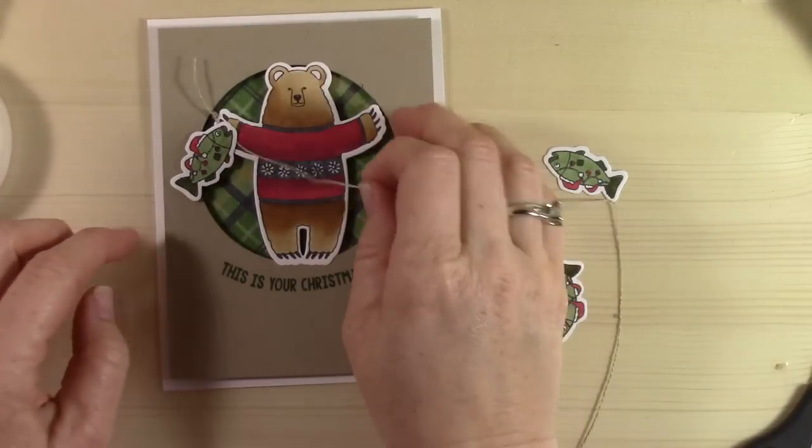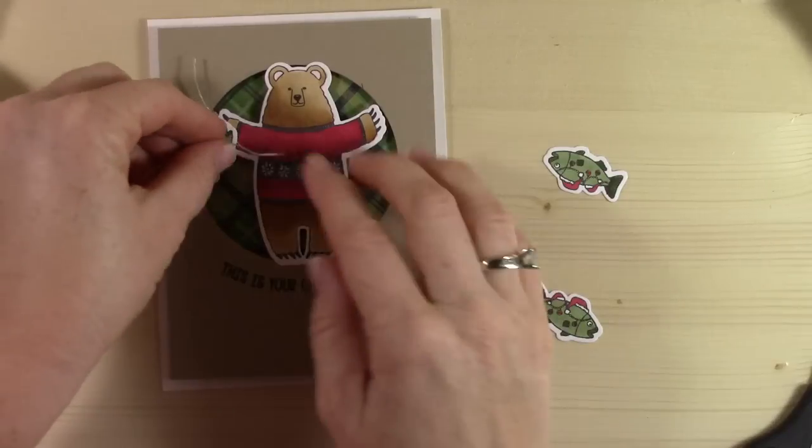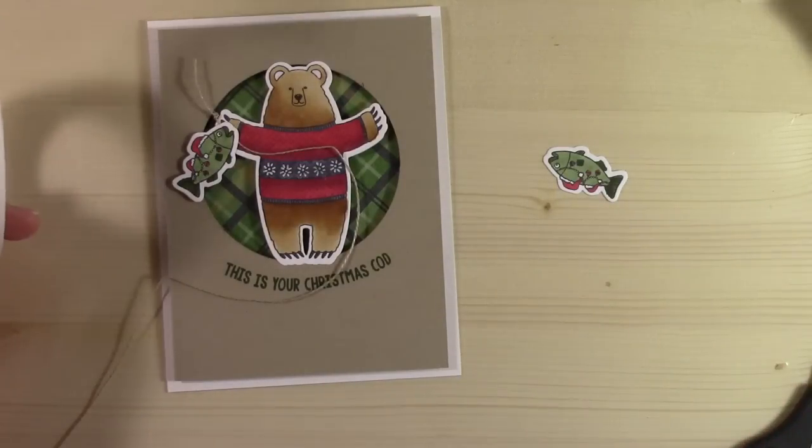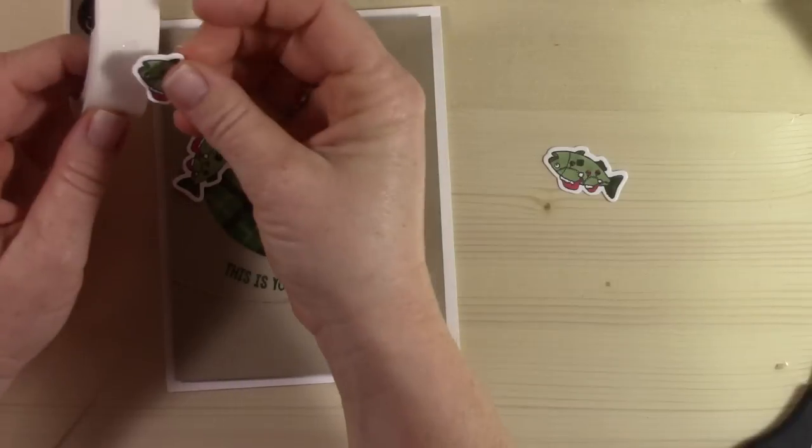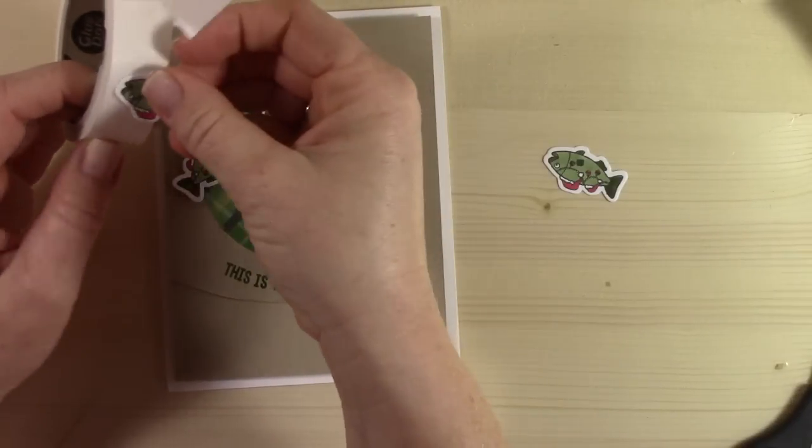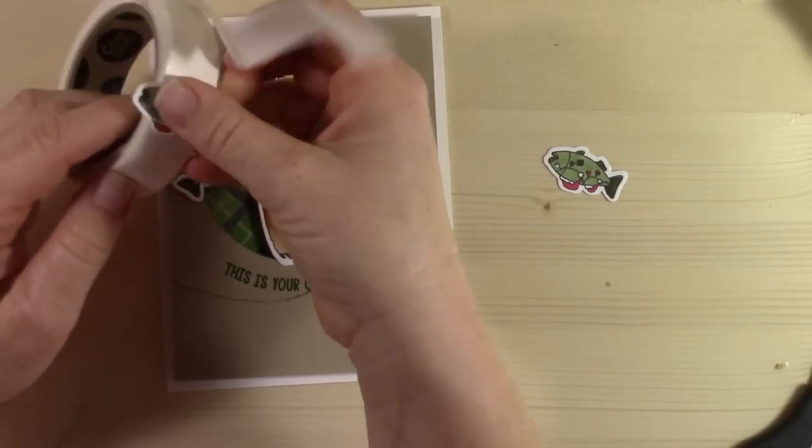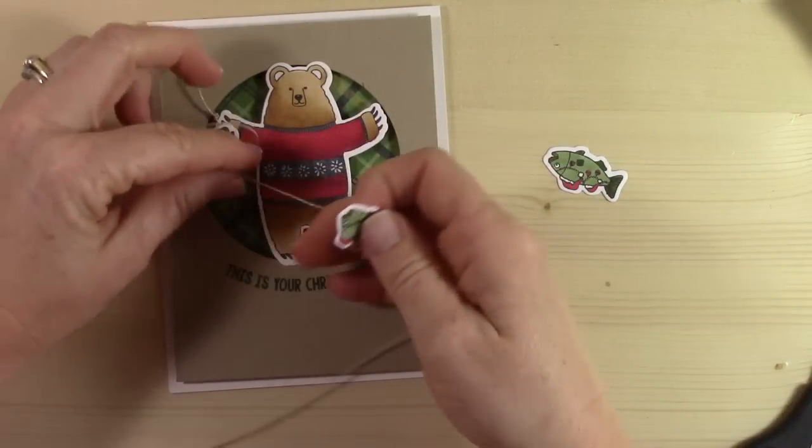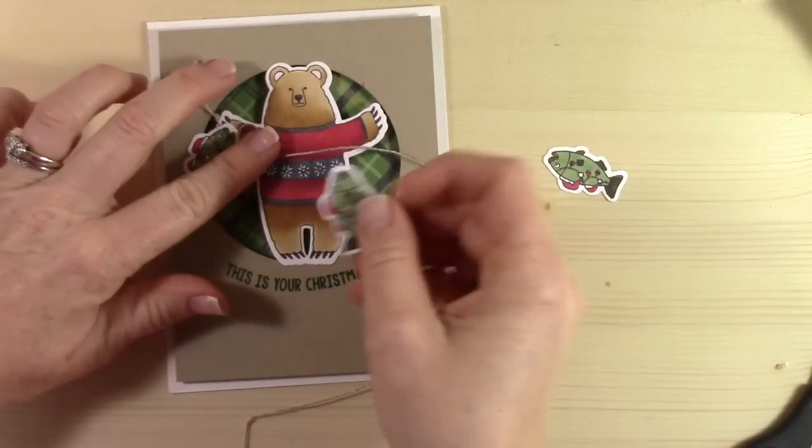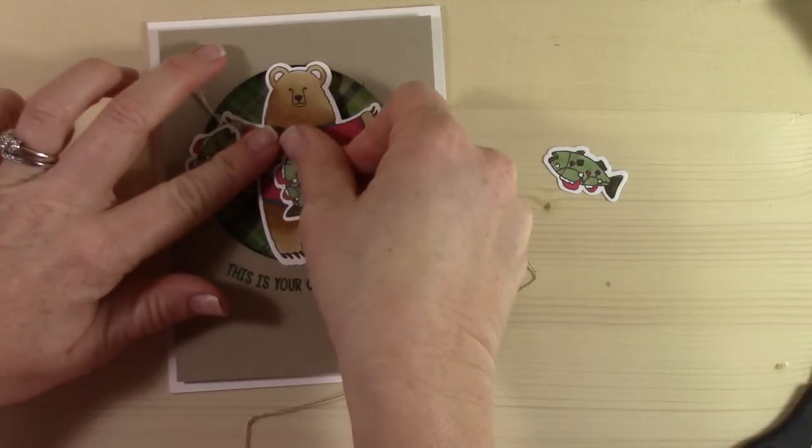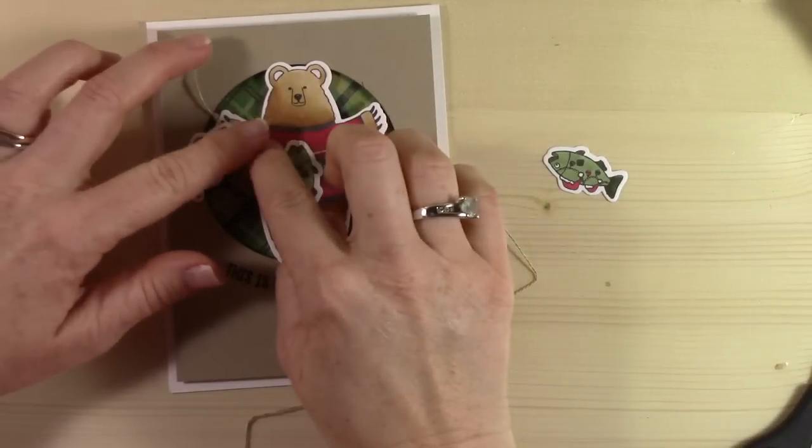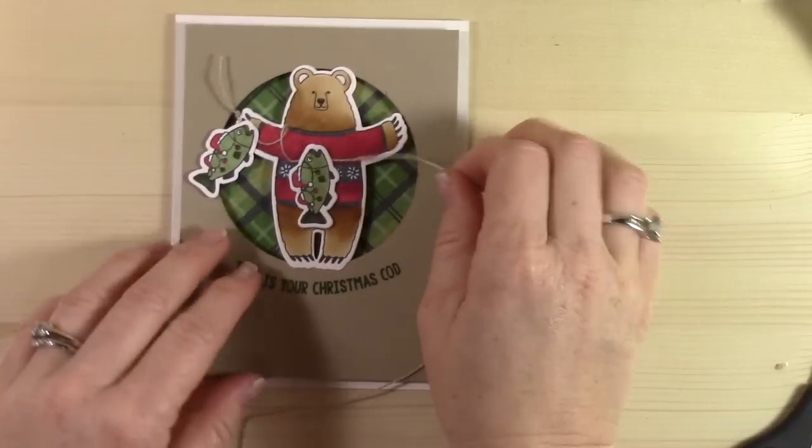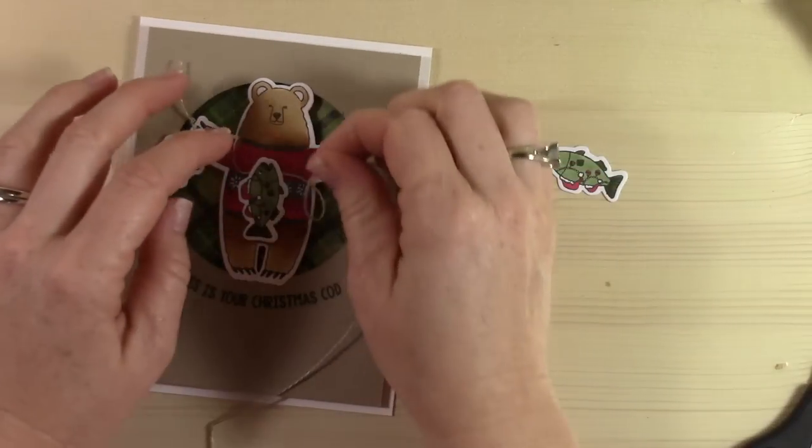I'm gonna grab a glue dot onto the back of my fish, kind of on his mouth. I'm gonna stick the glue dot onto the linen thread and then stick the glue dot down onto the bear's hand, so he's got a little fishy there. Then we're gonna make a loop in the linen thread. Let me get my next fish ready.